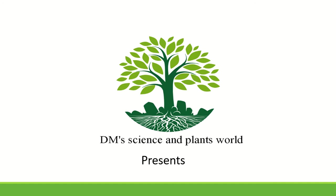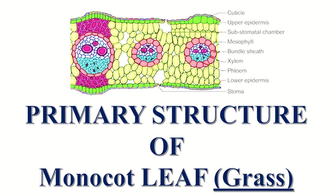DM Science and Plants World presents a video about the primary structure of a monocot leaf, using the grass leaf as an example. In a previous video, we already discussed the monocot and dicot stem, monocot and dicot root, and the dicot leaf. Check the description box to find the links for those videos. Today we are going to discuss the primary internal structure of the monocot leaf with the example of a grass leaf.